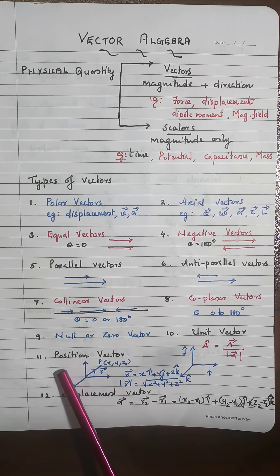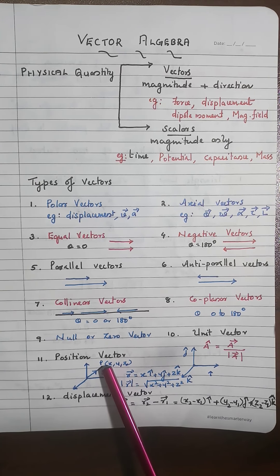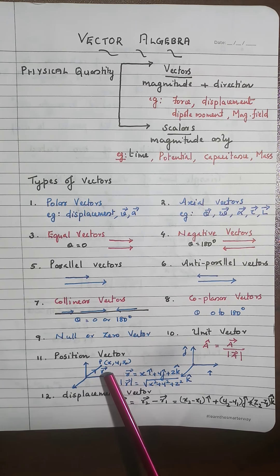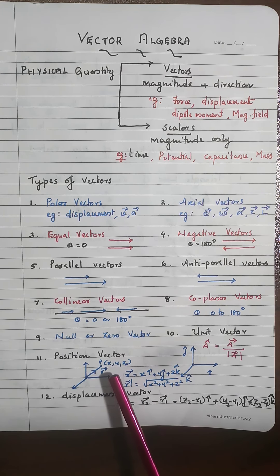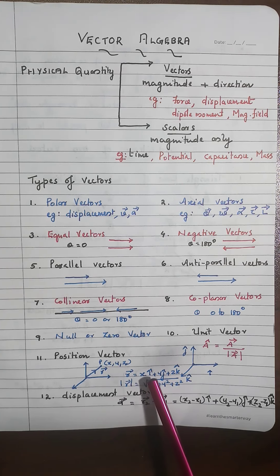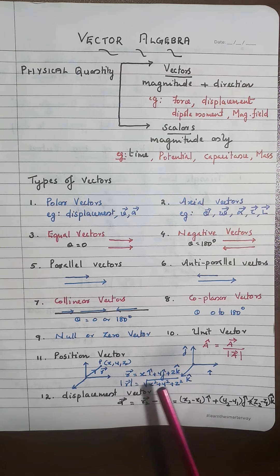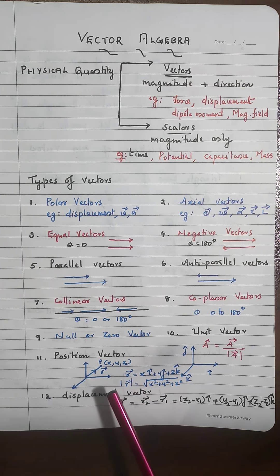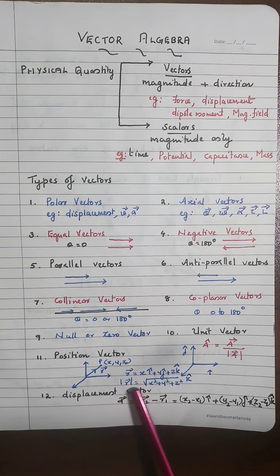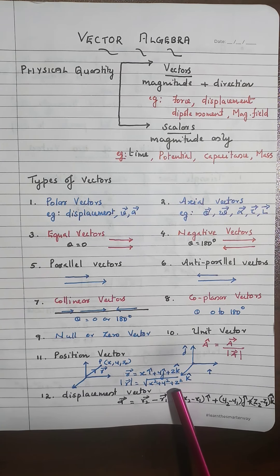The position vector, also called the location vector, represents the location of a point with respect to the origin; it is denoted as vector r. If the final point P has coordinates (x, y, z), we write the position vector in rectangular component form as xî + yĵ + zk̂, where x, y, z are the coordinates. Its magnitude is √(x² + y² + z²).